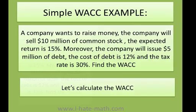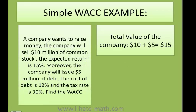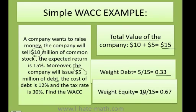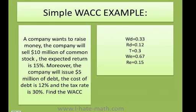Let's break down this problem. First, I need to figure out the weight of debt and the weight of equity. The total value of the company is $10 million of common stock plus $5 million of debt, which gives us $15 million total. The weight of debt is 5 divided by 15, which equals 0.33 or 33%. The weight of equity is 10 over 15, which equals 0.67 or 67%. Remember, these two weights must add up to 1.